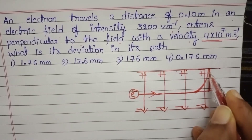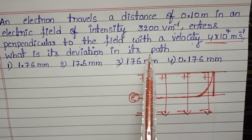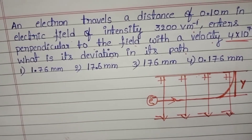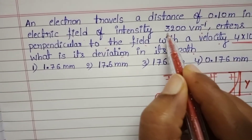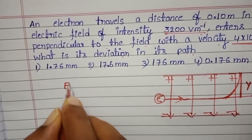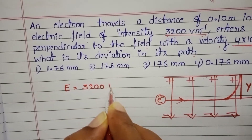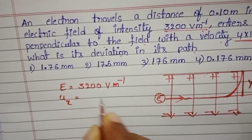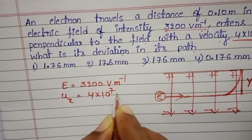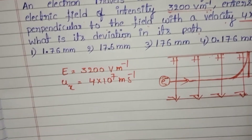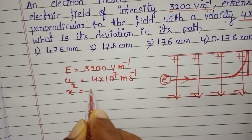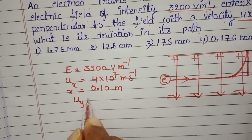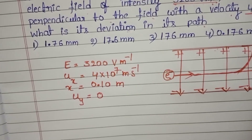We want to find out the deviation in the path — let it be Y. Given: intensity of electric field E equals 3200 volt per meter, initial velocity of the electron along the x-direction is 4 into 10 to the power 7 meter per second, distance along x-direction is 0.10 meter, and there is no initial velocity along the y-direction — it is zero.